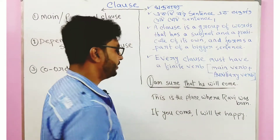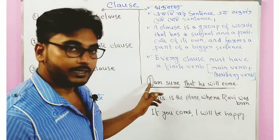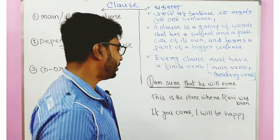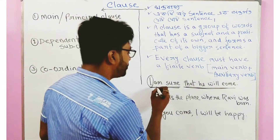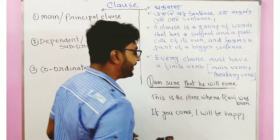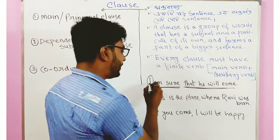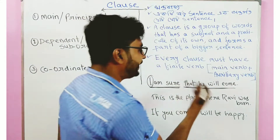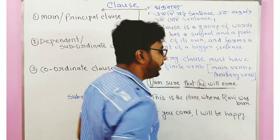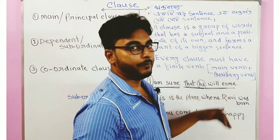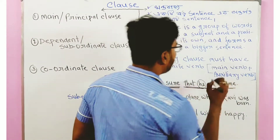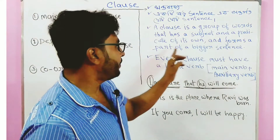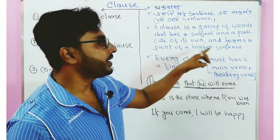In the sentence 'I am sure that he will come,' the subject is 'I' and the predicate is 'am sure.' Then 'he' is the subject and 'will come' is the predicate — forming parts of a bigger sentence.